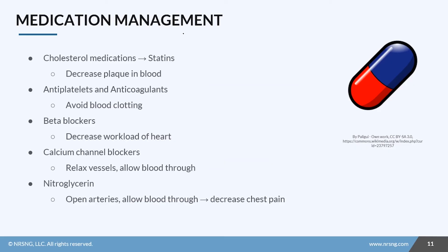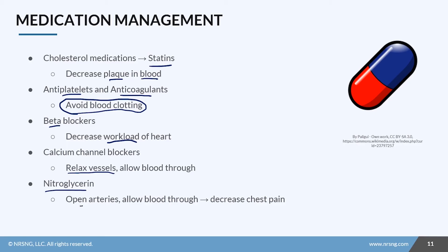To manage coronary artery disease, different medications may be used. Cholesterol medications such as statins help decrease plaque in the blood. Antiplatelets and anticoagulants help avoid blood clotting when plaque breaks off. Beta blockers help decrease the workload of the heart. Calcium channel blockers help relax the vessels to allow blood through. Nitroglycerin helps open the arteries and allow blood through, decreasing chest pain.